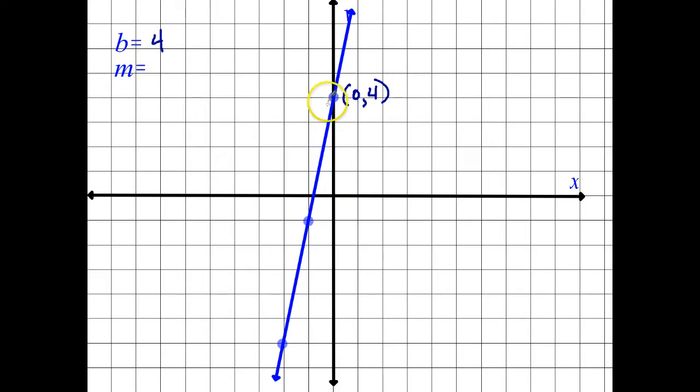And then secondly, let's find the slope. From here I can go down 1, 2, 3, 4, 5, and then left 1. So that would be negative 5 and negative 1. If I divide that, I'm going to end up with a positive 5. And that makes sense, right? It's pretty steep. It's also positive. So 5 makes sense. I didn't accidentally put 1 fifth.